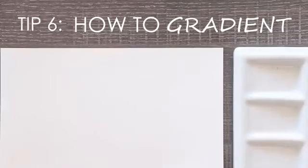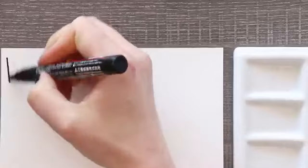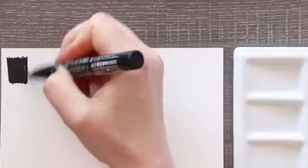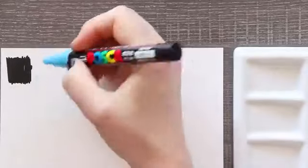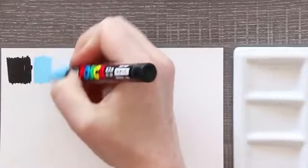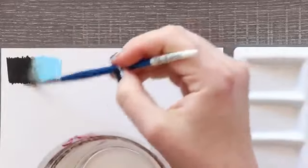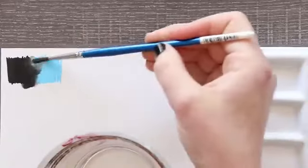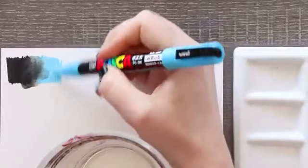Tip number six, or I guess technique, how to create a gradient. Creating a gradient with Posca pens is fairly easy, but you have to work fast. Posca pens are water soluble which means they mix with water, but only when they are wet. Once they dry they are hard to work with and sometimes I even find impossible. They don't reactivate well if at all.